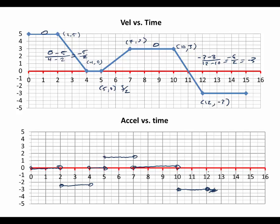This part of the line shouldn't be there. And then from 12 to 15, it's a horizontal line, so slope of 0. So here's two more examples of converting velocity time to acceleration versus time.